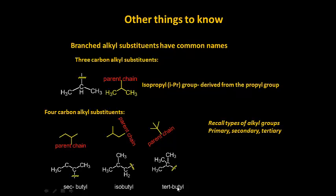These are some very important substituents. Butyl because this chain contains 1, 2, 3, 4 carbons. Secondary butyl because it's attached to the parent at a secondary site. Isobutyl - butyl again because it's 1, 2, 3, 4 carbons - attached at this primary carbon. And then tertiary butyl, because this carbon is tertiary - 1, 2, 3 carbons attached - and it's attached to the parent chain at that central carbon.